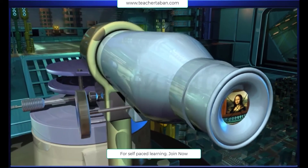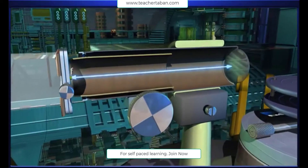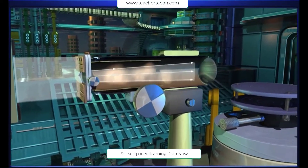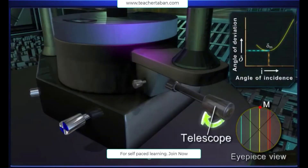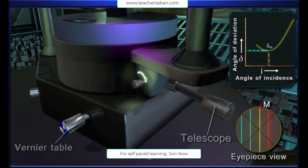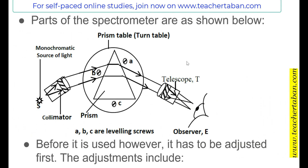In summary: firstly, the telescope is set to receive parallel rays. Then, the collimator is set to provide parallel rays. The prism is set in its minimum deviation position. After having watched that video, we can then come to the conclusion that whenever using the spectrometer, it must be adjusted first.